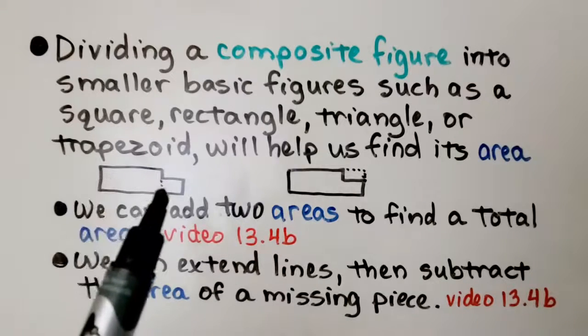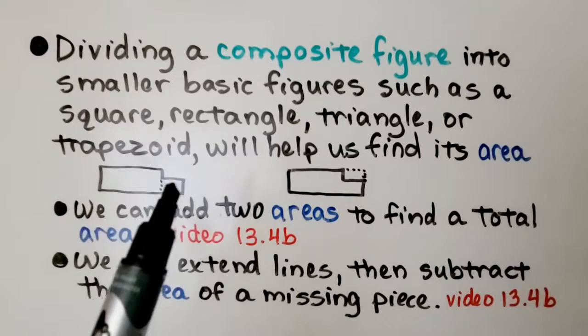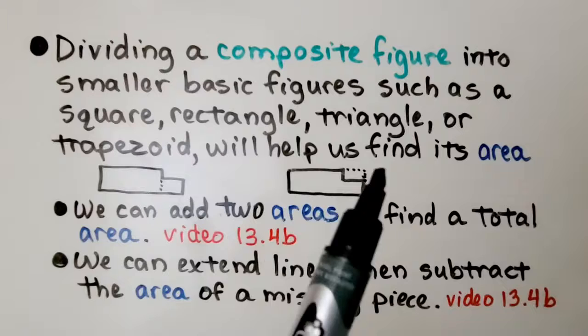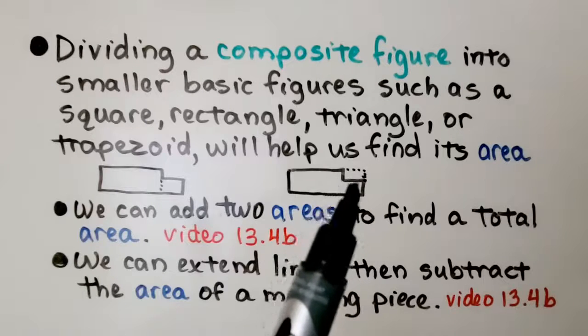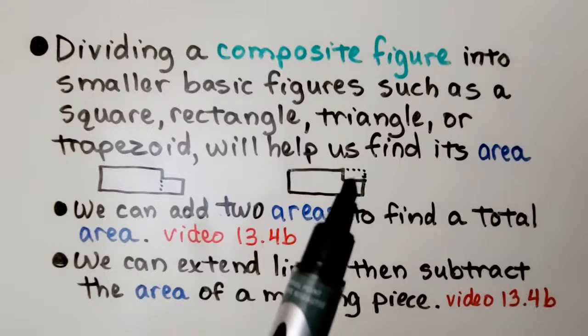We have a shape like this. We could split it into this rectangle and this rectangle. We could even extend the lines out, find the area of the entire thing, find the area of the small piece, and subtract it.